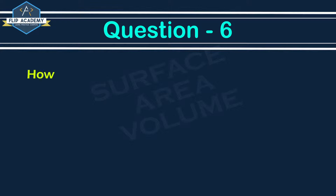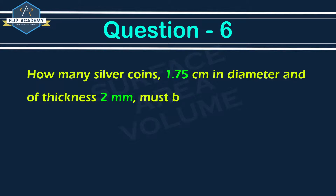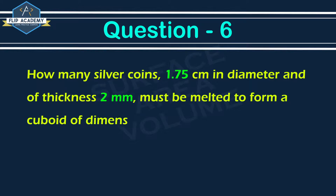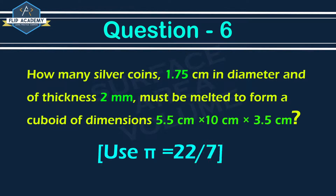Question 6: How many silver coins 1.75 cm in diameter and of thickness 2 mm must be melted to form a cuboid of dimensions 5.5 cm × 10 cm × 3.5 cm? Use π = 22/7.